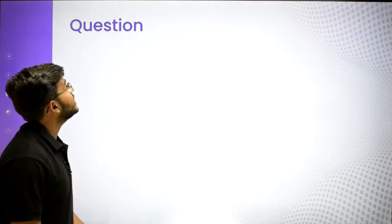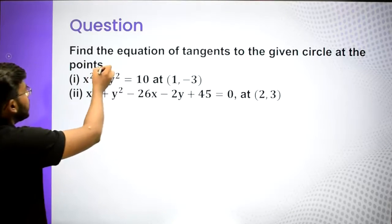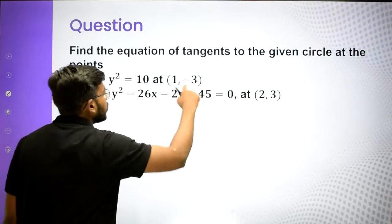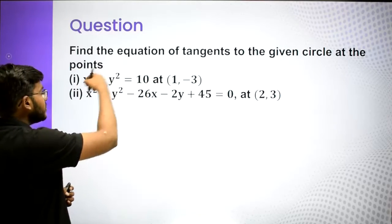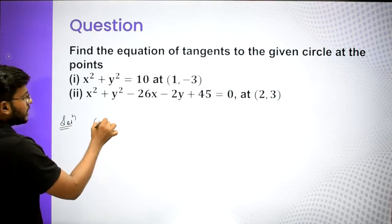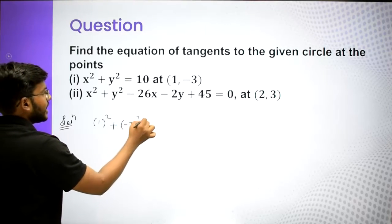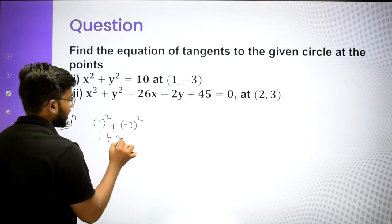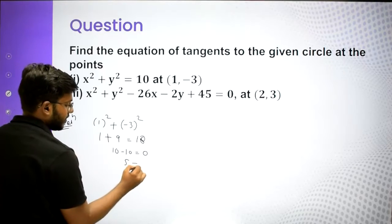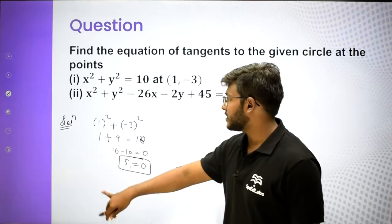Let's see one example: find the equation of tangent to the circle x² + y² = 10 at the point (1, -3). First, check whether this point is lying on the circle or not. Putting x=1, y=-3: 1² + (-3)² = 1 + 9 = 10. So 10 = 10, meaning 10 - 10 = 0. S1 equals zero, so the point lies on the circle.